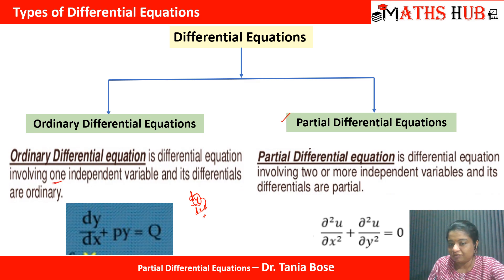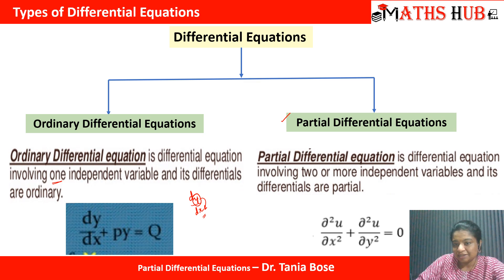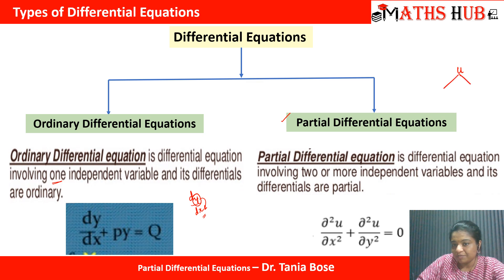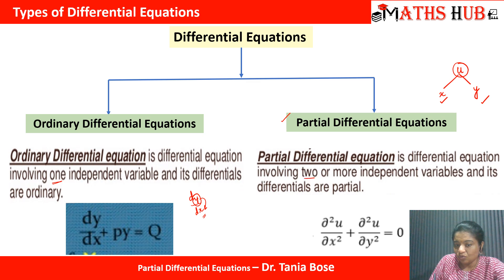In partial differential equations, we have a differential equation involving two or more independent variables and the differential coefficients with respect to them. For example, we have del²u/del x² and del²u/del y², so u is dependent on two variables x and y. Here u is the dependent variable and x and y are the independent variables.